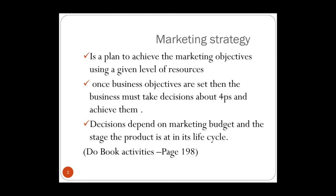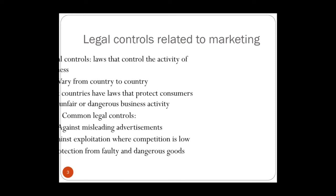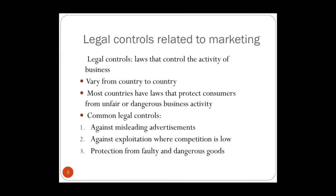In your book there are some activities related to marketing strategy on page 198. Legal controls related to marketing — you will see the term 'legal controls' in many chapters, but here in the marketing section we have legal controls related to marketing, and in the last section of the book we have legal controls related to pollution and discrimination. The government puts these legal controls in place — they are laws that control the activity of the business in terms of marketing, and they will vary from country to country.